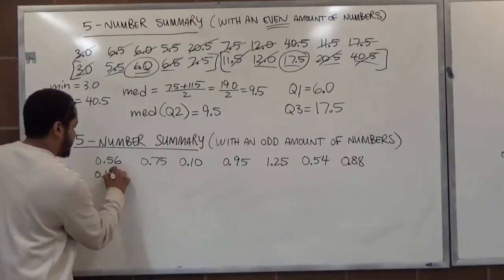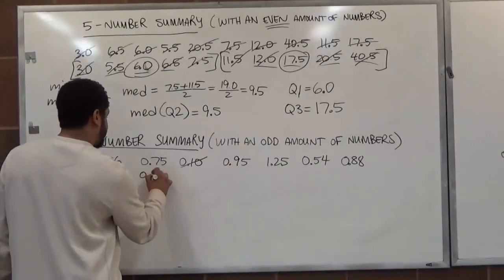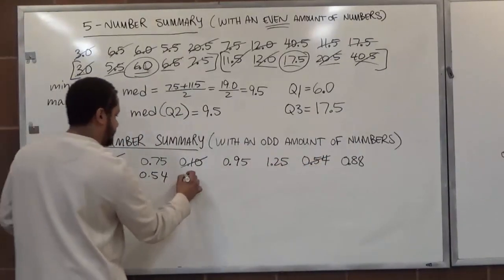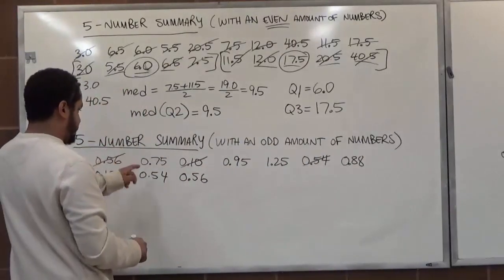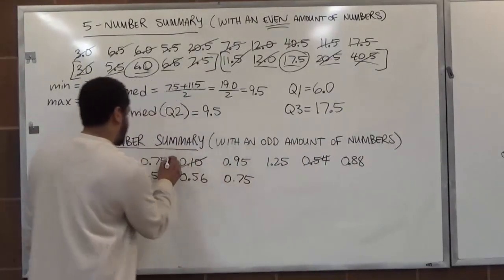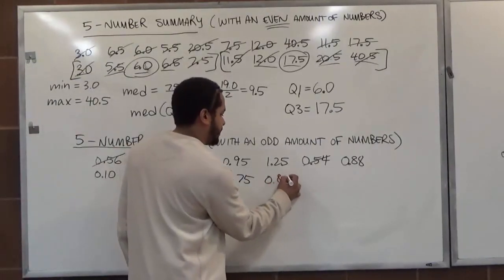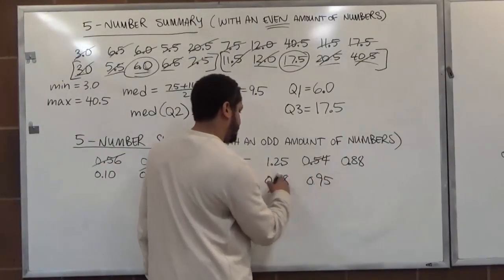We start with 0.10, the following data would be 0.54, following 0.54 we have 0.56, followed by that we have 0.75, which is then followed by 0.88, and then 0.95, followed by 1.25.